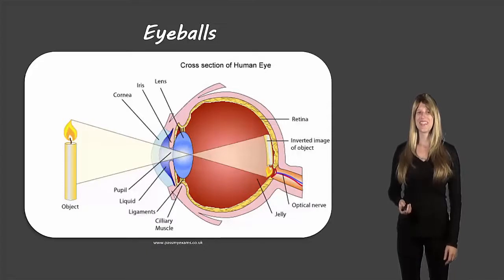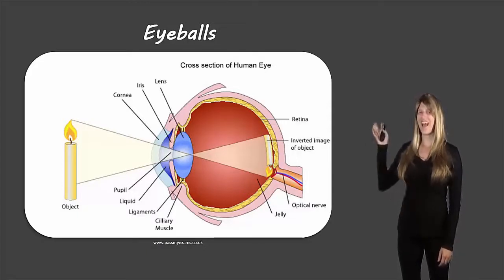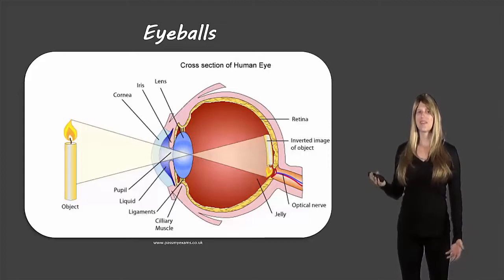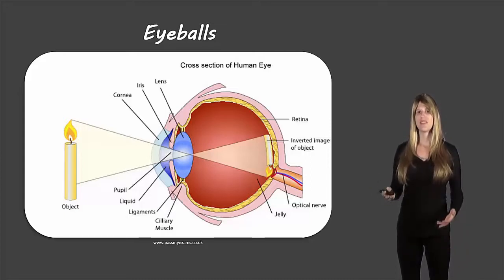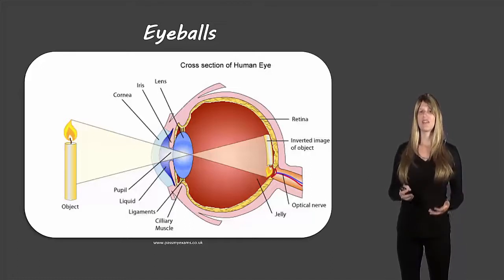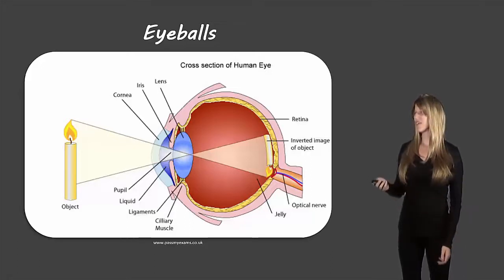Hello students, Ms. Swanson here, and today we're going to take a look at eyeballs. This picture here shows an eyeball with all the different parts labeled. For this unit in physics we don't need to know all of the different parts, but we do need to understand how the lens in the eyeball works.